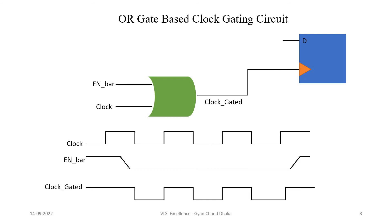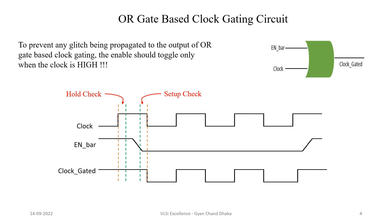Now let's see the timing check associated with an OR gate based clock gating circuit. The restriction on the enable signal for an OR gate based clock gating circuit is that it should only toggle whenever the clock is high. If the enable signal toggles when the clock is low, our gated output clock will be glitchy. The further restriction is that it should not toggle near the rising and falling edges of the clock signal either. So the enable signal can only toggle in a specific time period to have a glitch-free gated output waveform. The time for which the enable signal should be stable before the negative edge of the clock is the setup time, and the check is the setup check. The time for which the enable signal should be stable after the rising edge of the clock is the hold time, and the associated check is the hold check.